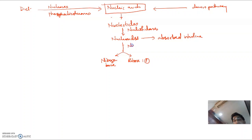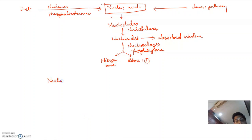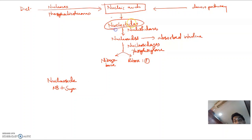Nucleosides are broken down by nucleosidases or a phosphorylase. A nucleoside is nothing but nitrogen base plus a sugar. This nucleoside is formed from the nucleotides, which are formed from nucleic acids broken down from the cell.